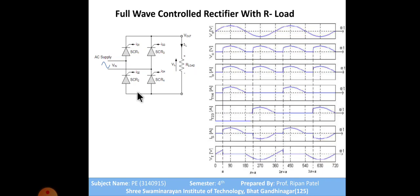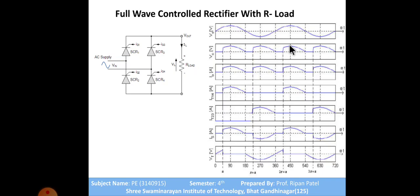When current becomes zero, both SCRs turn off due to natural commutation. Polarity changes - this terminal becomes positive and the other negative. Gate pulses are given to SCR2 and SCR3 at pi plus alpha. The current path is through SCR3, through the load, through SCR2, and back to supply. The output voltage is positive again. SCR1 and SCR4 turn on again at the next firing angle alpha, and the cycle repeats continuously.